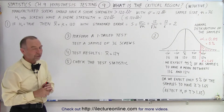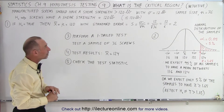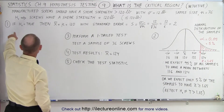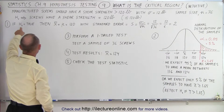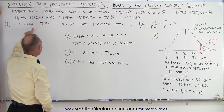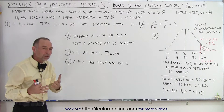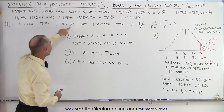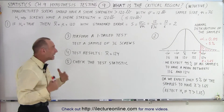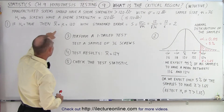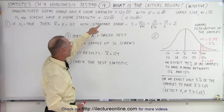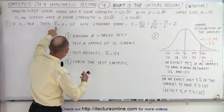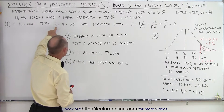Notice that our sample size is equal to 36 in this case. First of all, if the null hypothesis is true, then if we take a sample, we expect the mean of the sample to be the same as the mean of the population. If the null hypothesis is true, the mean would be 120 pounds. Therefore, the sample that we take would have a mean of 120 pounds.